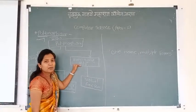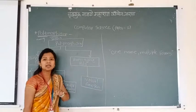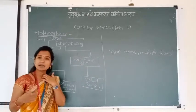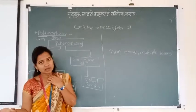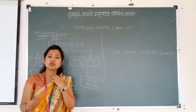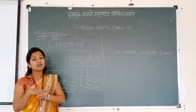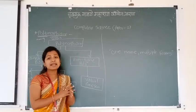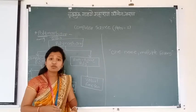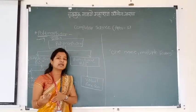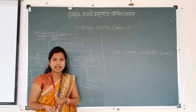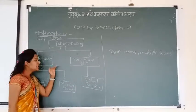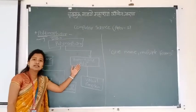Sometimes in the exam we are asked: what is the difference between static binding and dynamic binding? We get confused about what static and dynamic binding are. Compile time polymorphism is called static binding, and runtime polymorphism is called dynamic binding.